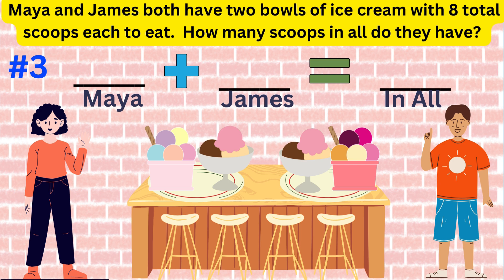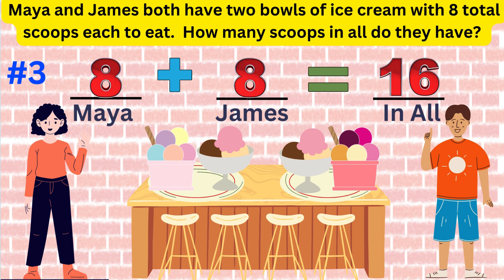Word problem number three: Maya and James both have two bowls of ice cream with eight total scoops each to eat. How many scoops in all do they have? The answer is they have 16 scoops of ice cream in all. The number sentence is 8 plus 8 equals 16. This is a doubles fact.